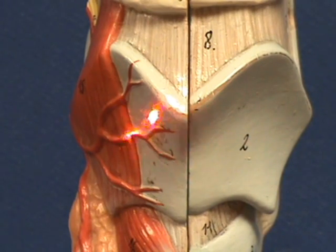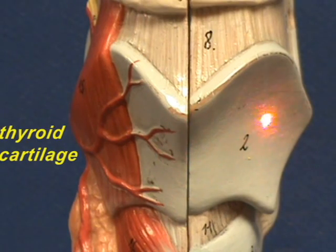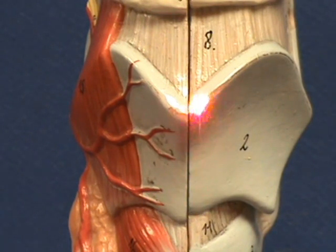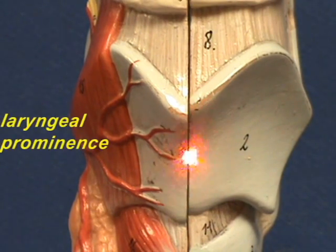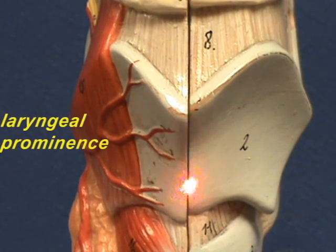This is the thyroid cartilage. It is an unpaired cartilage, and it forms the Adam's apple because right over here you have a prominence, referred to as the laryngeal prominence, which is more prominent in males than in females, and is commonly referred to as the Adam's apple.